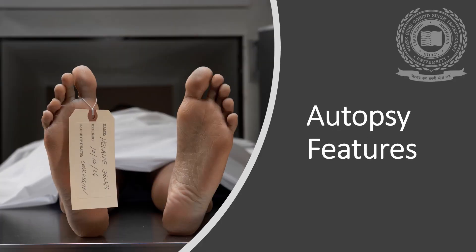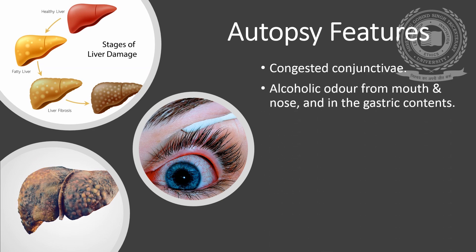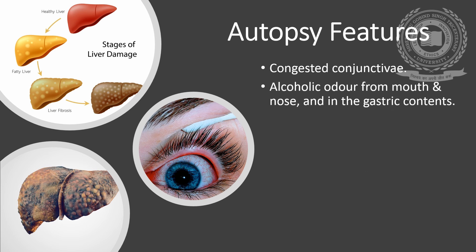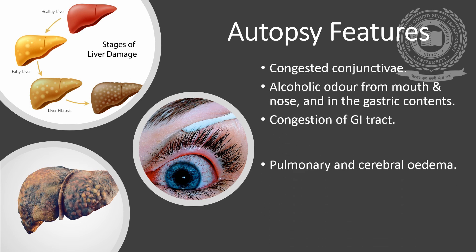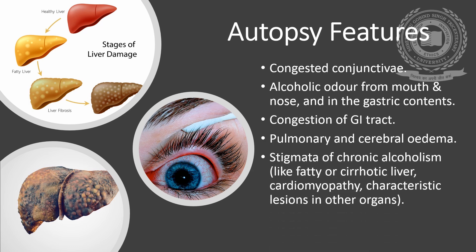Autopsy features include congested conjunctiva, characteristic odor in the vicinity of the mouth and nose and in the gastric contents, congestion of the GI tract, pulmonary and cerebral edema, and stigmata of chronic alcoholism may be present such as fatty or cirrhotic liver, cardiomyopathy, and characteristic lesions in other organs.